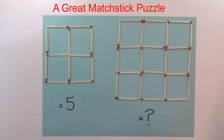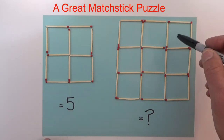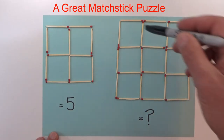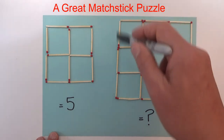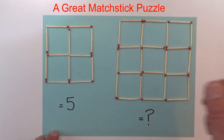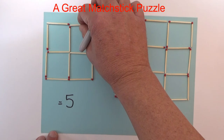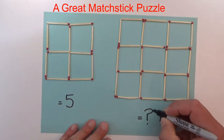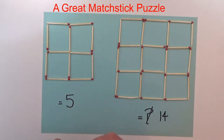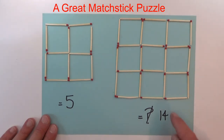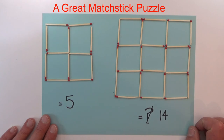Adding those together: nine small squares, four two-by-two squares, and one large three-by-three square — that's nine plus four is thirteen, plus one equals fourteen. So the answer is fourteen. This right-hand group of matches has created 14 squares in total. So the final answer is five for the left and fourteen for the right. I hope you've enjoyed this video. Thanks for watching and goodbye for now!